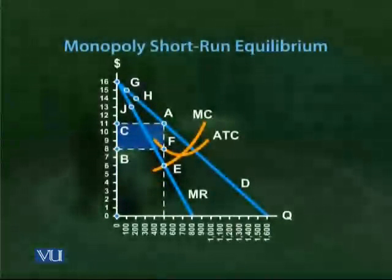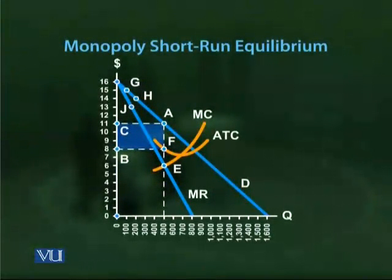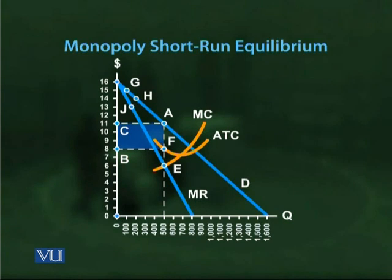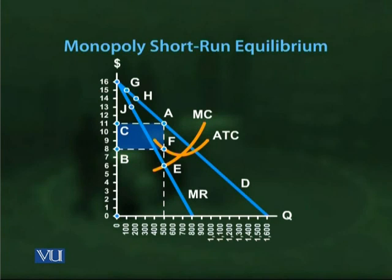For short-run equilibrium, the profit maximizing level of output is where marginal cost equals marginal revenue. Here the firm is producing 500 units; the price at this output level is $11 per unit and average cost is $8 per unit. Profit per unit is $11 − $8 = $3 per unit. Multiplying by Q = 500 units gives maximum profit of $1,500.